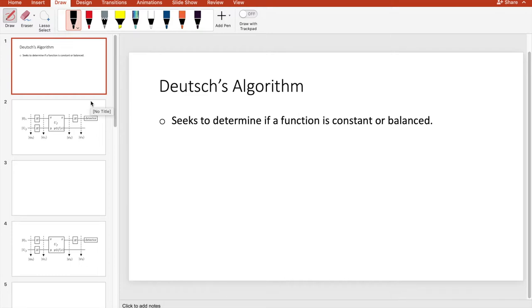Alright, so let's get started with Deutsch's problem. He essentially seeks to determine if a function is constant, that is, f of 0 equals f of 1, or if it is balanced, where f of 0 does not equal f of 1.